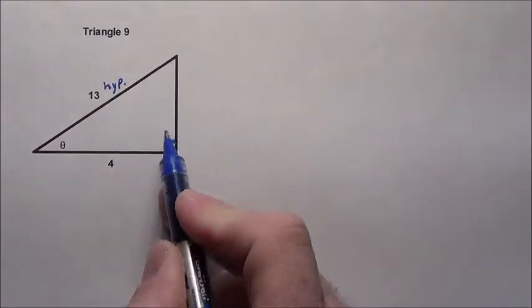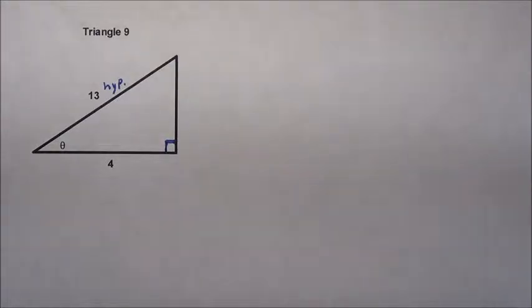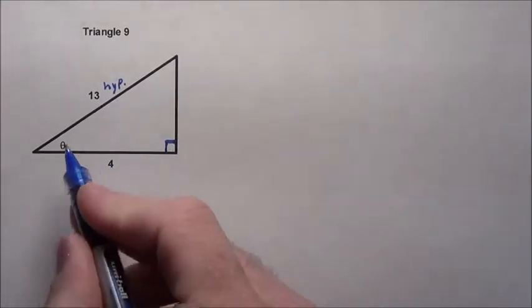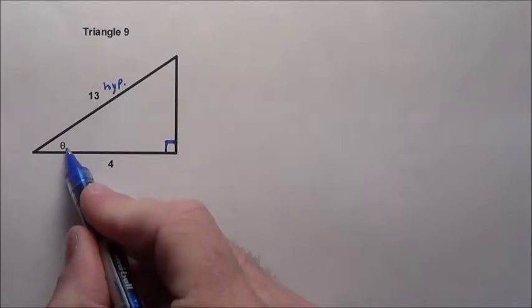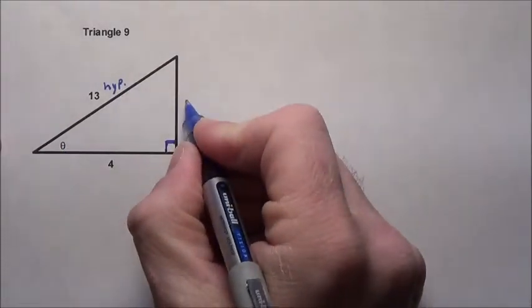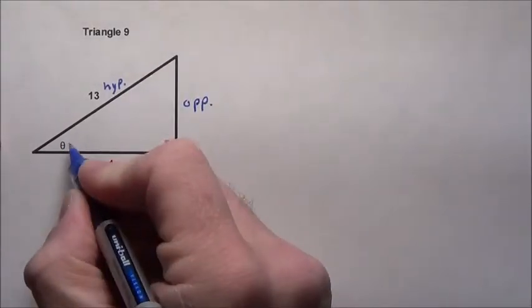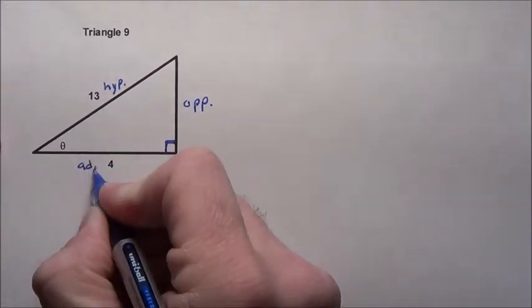Now the two sides are called your adjacent and your opposite sides, and it's determined by where the angle is. In this case, here's the angle theta we're trying to figure out. Across from it, that's going to be called its opposite side, and right beside it is going to be called its adjacent side.